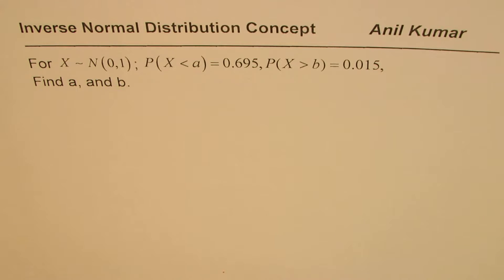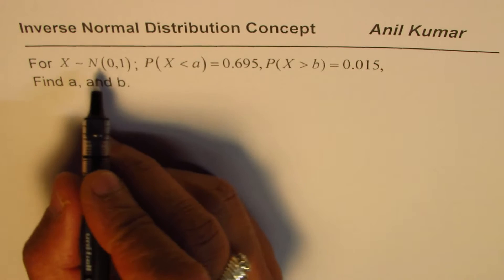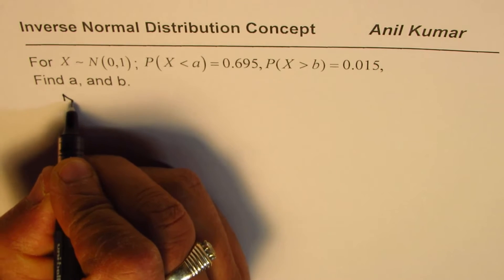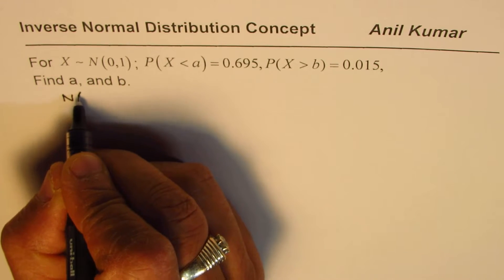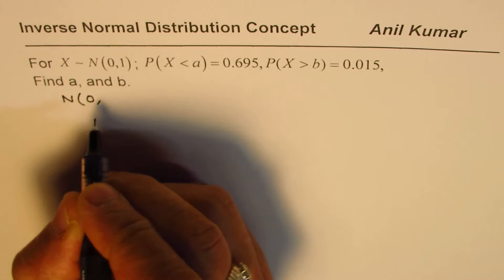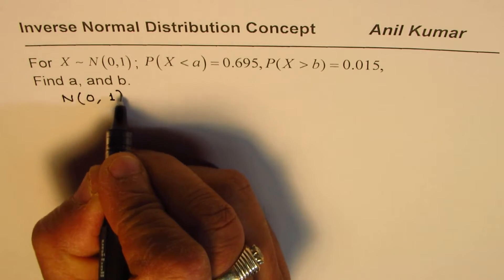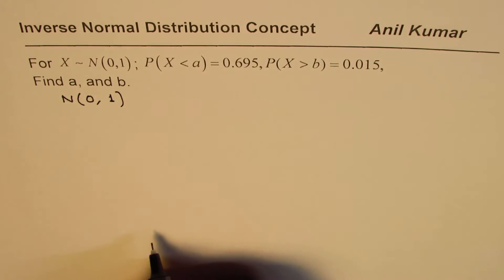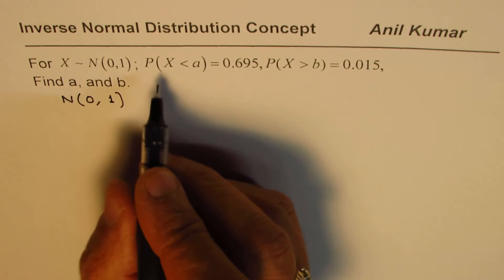Now, here we already have a normalized normal distribution since we have 0 as the mean and 1 as variance. So we can straight away use the standardized normal distribution tables. That is easy.